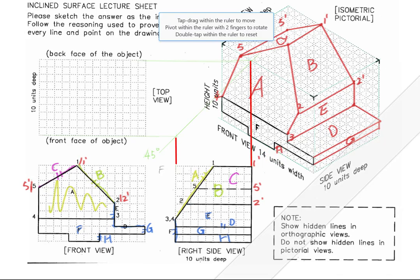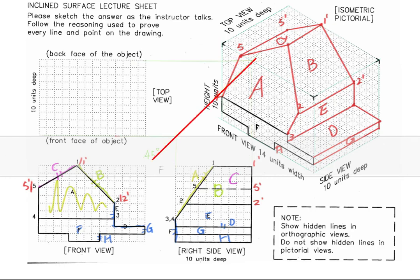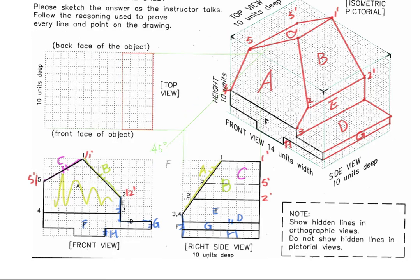Now we can have the front faces of the right side and the top, and the back faces of the right side and the top connected to form the 45-degree miter line. The 45-degree miter line can be used to transfer depths from the right side to the top or vice versa. Since surface B is parallel to the top of the glass box, let's do surface B first. Since surface A is foreshortened, we have to rely on the numbers. Remember, the front and the top are aligned vertically, so the numbers should be aligned vertically. The top and the right side share the same depths, so the numbers from the right side can be projected to the 45-degree miter line and then located in the top.